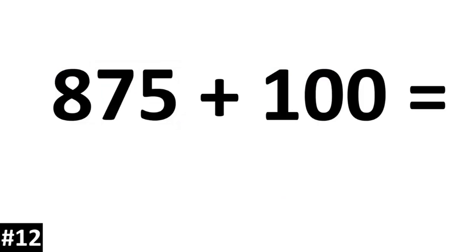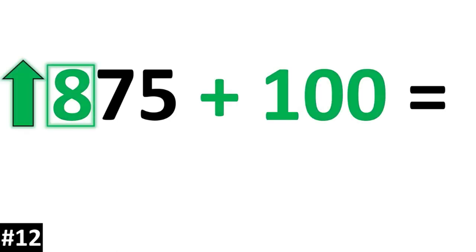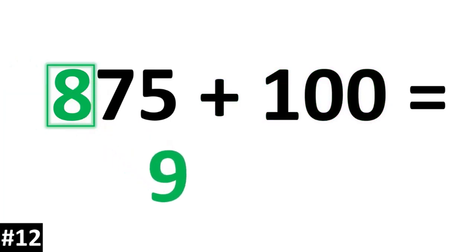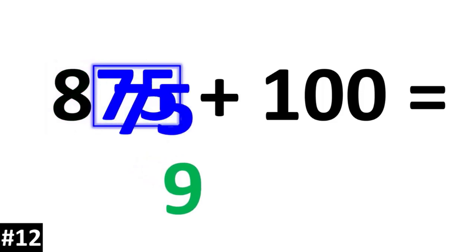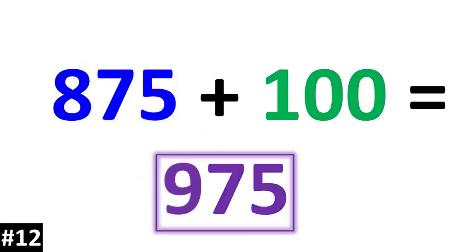875 plus 100. 875 has a hundreds digit of 8. If it goes up by 1, it becomes a 9. The other numbers stay the same, and we have 975.